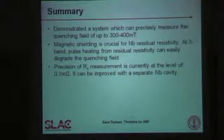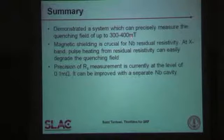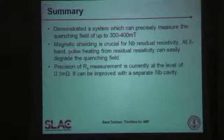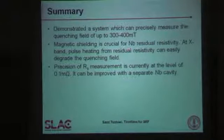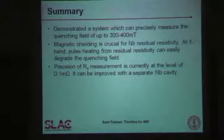In conclusion, we have demonstrated a system that can precisely measure the quenching field up to 300 or 400 millitesla easily, and we can go even further by modifying some of the directional couplers since we have plenty of power — we are currently throwing away 90 percent of it. Magnetic shielding turns out to be crucial for niobium residual resistivity at X-band. Pulsed heating was the main cause of our earlier problems — our ignorance of that fact, as we are relative newcomers to this field.